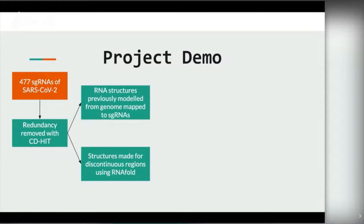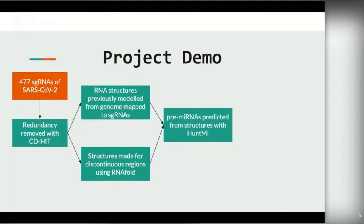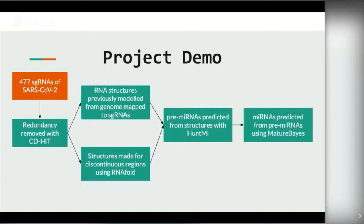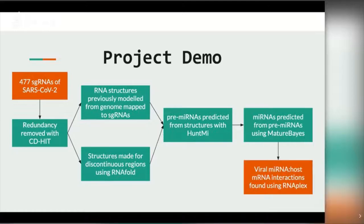Following this, both sets of structures were then put through HuntMe, which predicts which structures could be pre-microRNA candidates. Following this, microRNAs were predicted using mature bays. Finally, viral microRNAs and host mRNA interactions were modeled using RNA plaques.